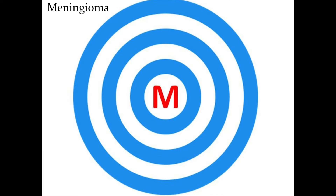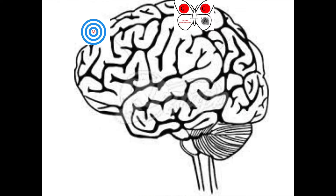The next one here is meningioma. Why is it the blue circles with the M in the middle? The M stands for meningioma. The blue circles represent psammoma bodies — associated with laminated calcification, like rings on a tree. It looks like a bullseye. Where was this? It's in the convexities, so we put it right there on the outside. Meningioma: psammoma bodies, rings on a tree, in the convexities, resectable.